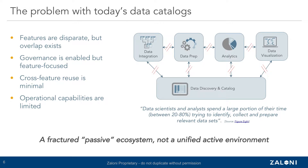Looking at this ecosystem, there are distinct feature sets that overlap and exist across each of these capabilities. Data ingestion, data prep, analytics, data visualization, and data cataloging comprise this data supply chain ecosystem. Data prep technologies may contain some data discovery and cataloging features, and data visualization tools increasingly allow for more self-service ingestion and analytics.